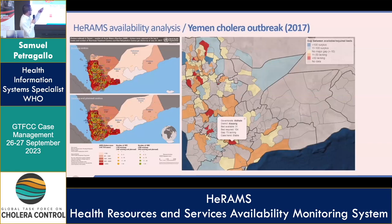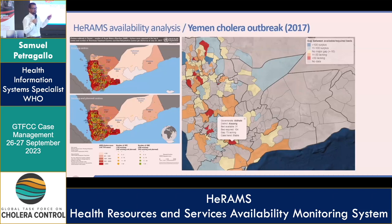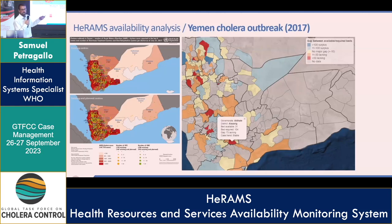I wanted to give the particular example of Yemen because that work was done on a cholera outbreak. Something we attempted at the time was to basically match the capacities that were monitored through HRAMS — the specific cholera response capacities — to the expected number of cases that would require hospitalization in this particular case. Estimates were made based on numbers from the surveillance system in terms of what the need would be, and we had the numbers in terms of what was available, so people at the country level, with that data, started prioritizing where resources would need to be deployed.